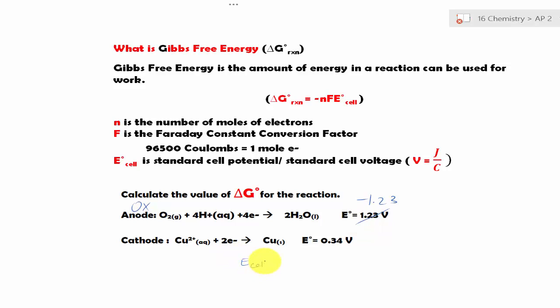So E_cell, again, is equal to oxidation plus reduction. So we plug in the oxidation and reduction. This gives us -0.89 volt.